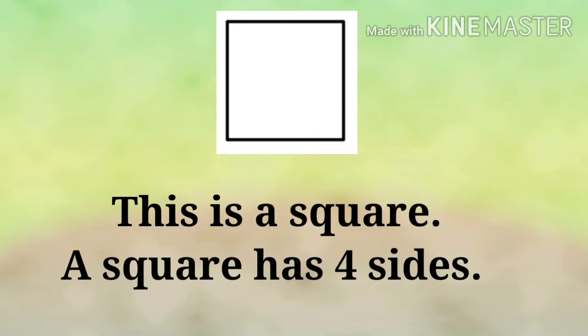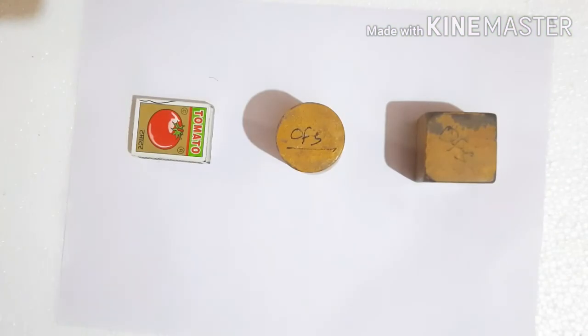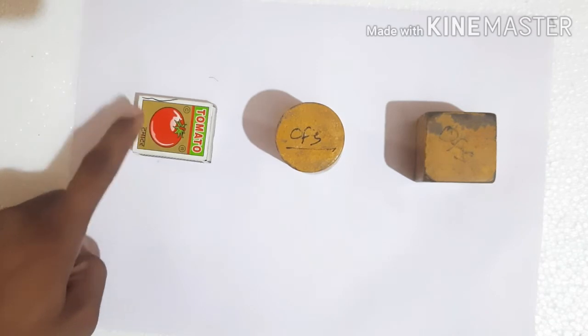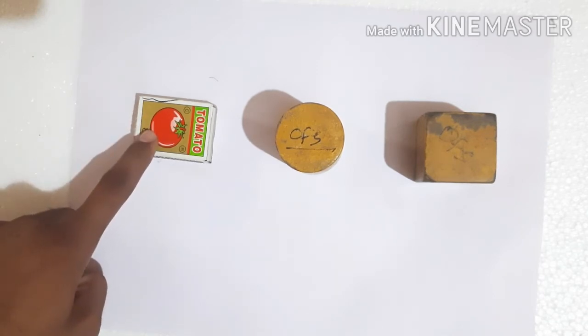Now this is the last figure. Do you know what this is? Very good! This is a square, and a square also has four sides, just like a rectangle. Now let's draw these shapes.